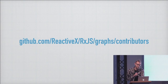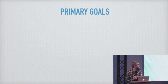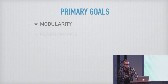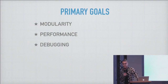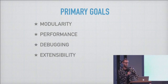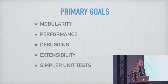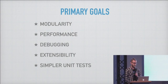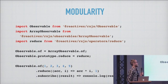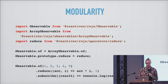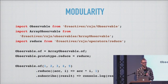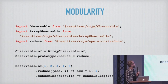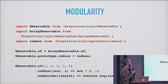The primary goals for this version of Rx are modularity, improving performance, improving the debugging story, improving extensibility like being able to extend observable, and writing much easier to read and write unit tests. On the modularity front — a big complaint from the node world has been that with Rx you've always had to bring in everything or nothing. In this latest version, if you're using TypeScript or ES6, you can import just the operators you want with modules.